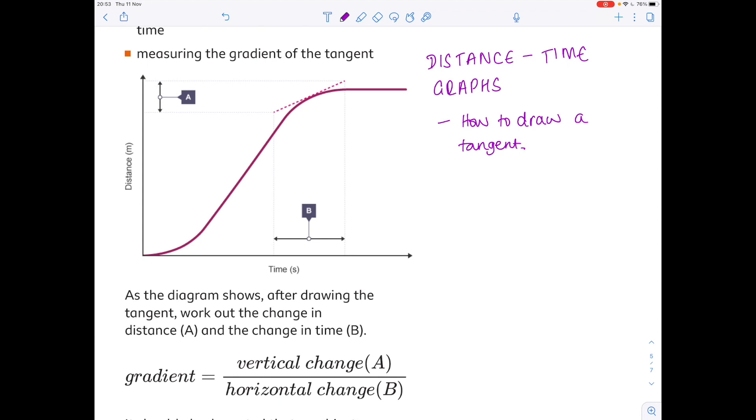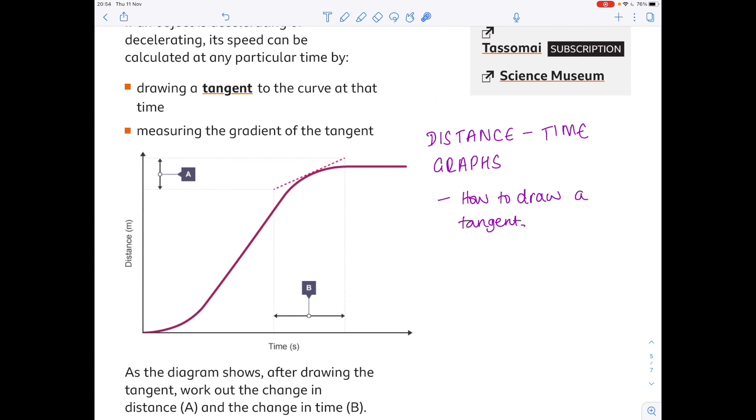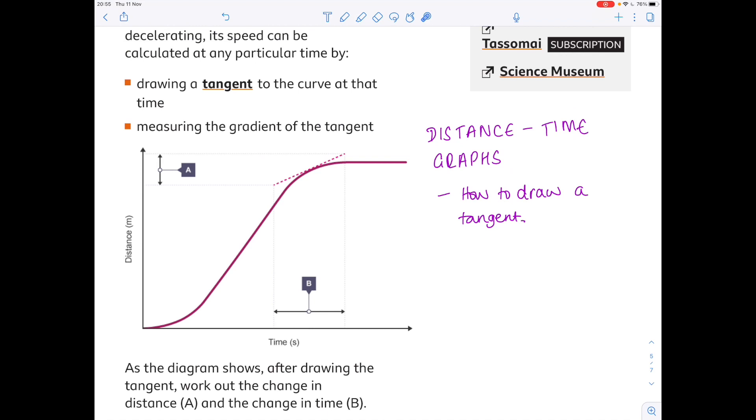So I'm using this BBC bite-size graph to help us here because it's definitely the best way of doing this. In this graph we can see that we have a period here of constant speed and then the vehicle's acceleration changes and we might be interested in working out its speed at a particular moment. It's going to be very difficult with a curve so that's where the tangent comes in.